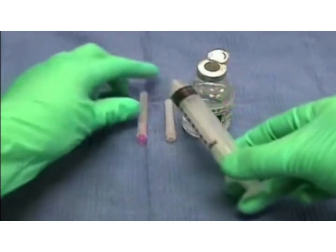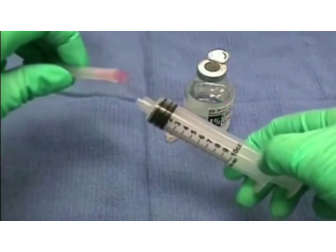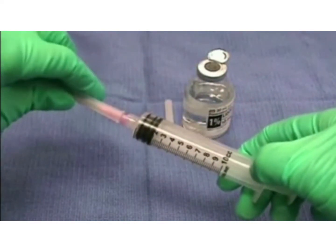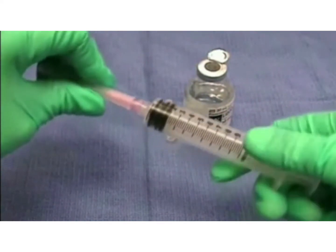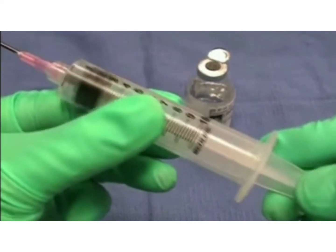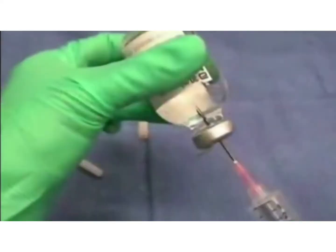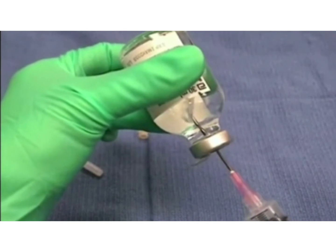Local anesthesia in field block should be given in a circumscribed manner. To draw your anesthesia into the syringe, attach the large bore needle to your syringe and aspirate 3 to 5 cc of air. Inject the air into the anesthetic bottle before withdrawing the anesthetic.